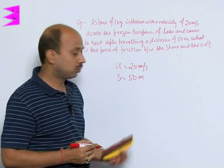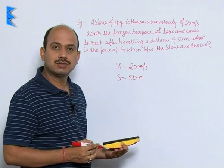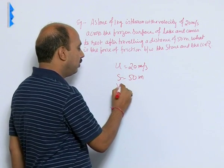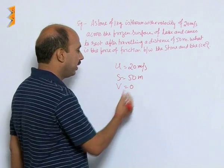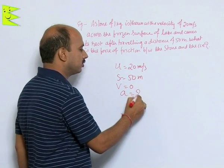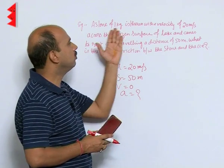It comes to rest. Because obviously there is a force of friction which is acting in opposite direction. So final velocity will be 0 because it is coming to rest. So we have to calculate first acceleration. If you calculate acceleration, mass is given to you, you can calculate force.